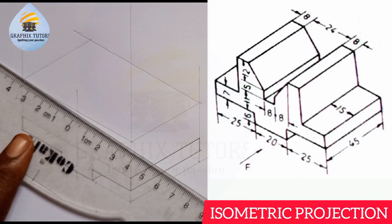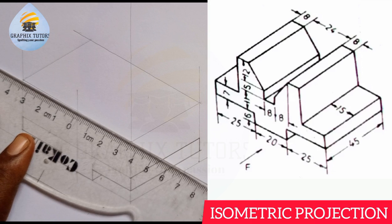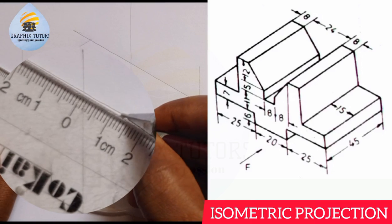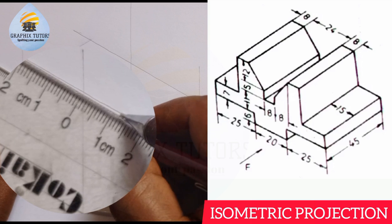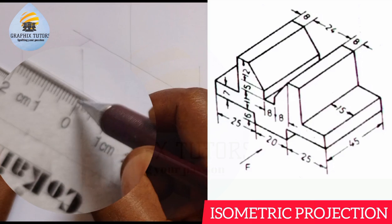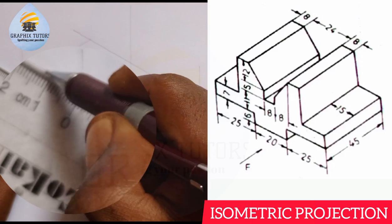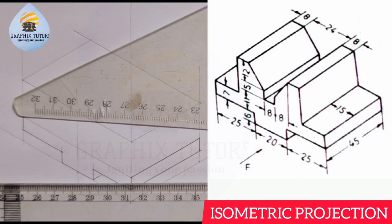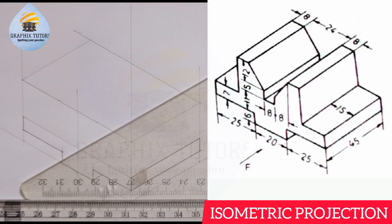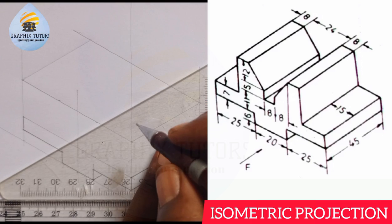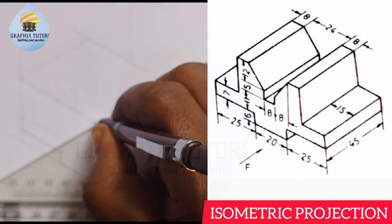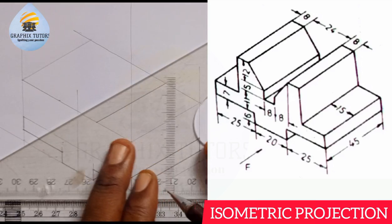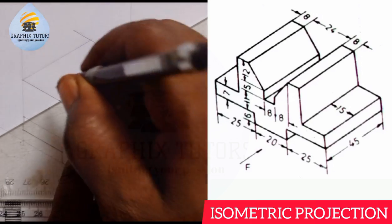From zero I'll measure 12 to the right and from zero, 10, 11, 12 to the left. I will use my set square this way and move it behind so I can take in. From here I'll take it to the back, and from here also I'll take it to the back.